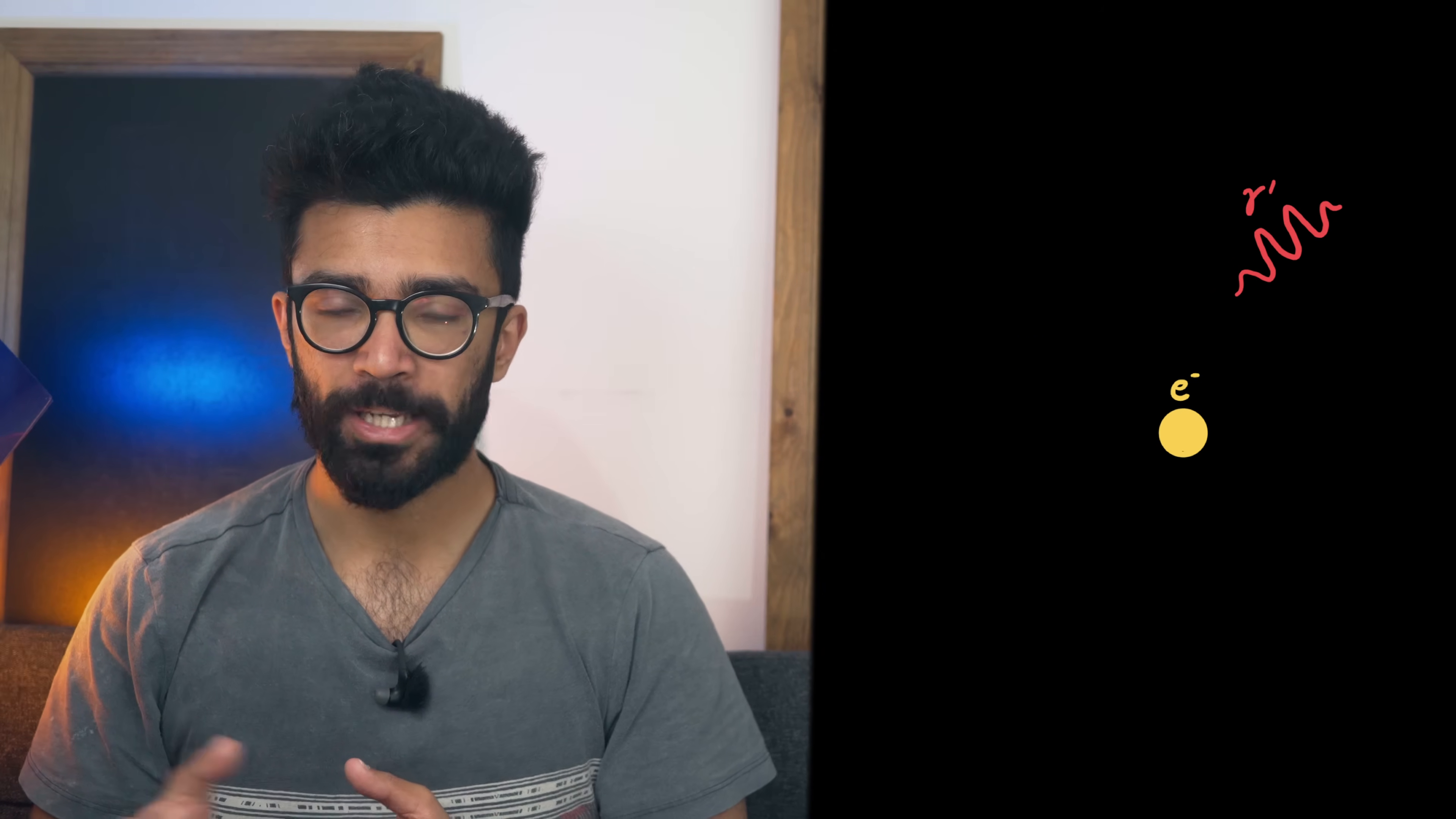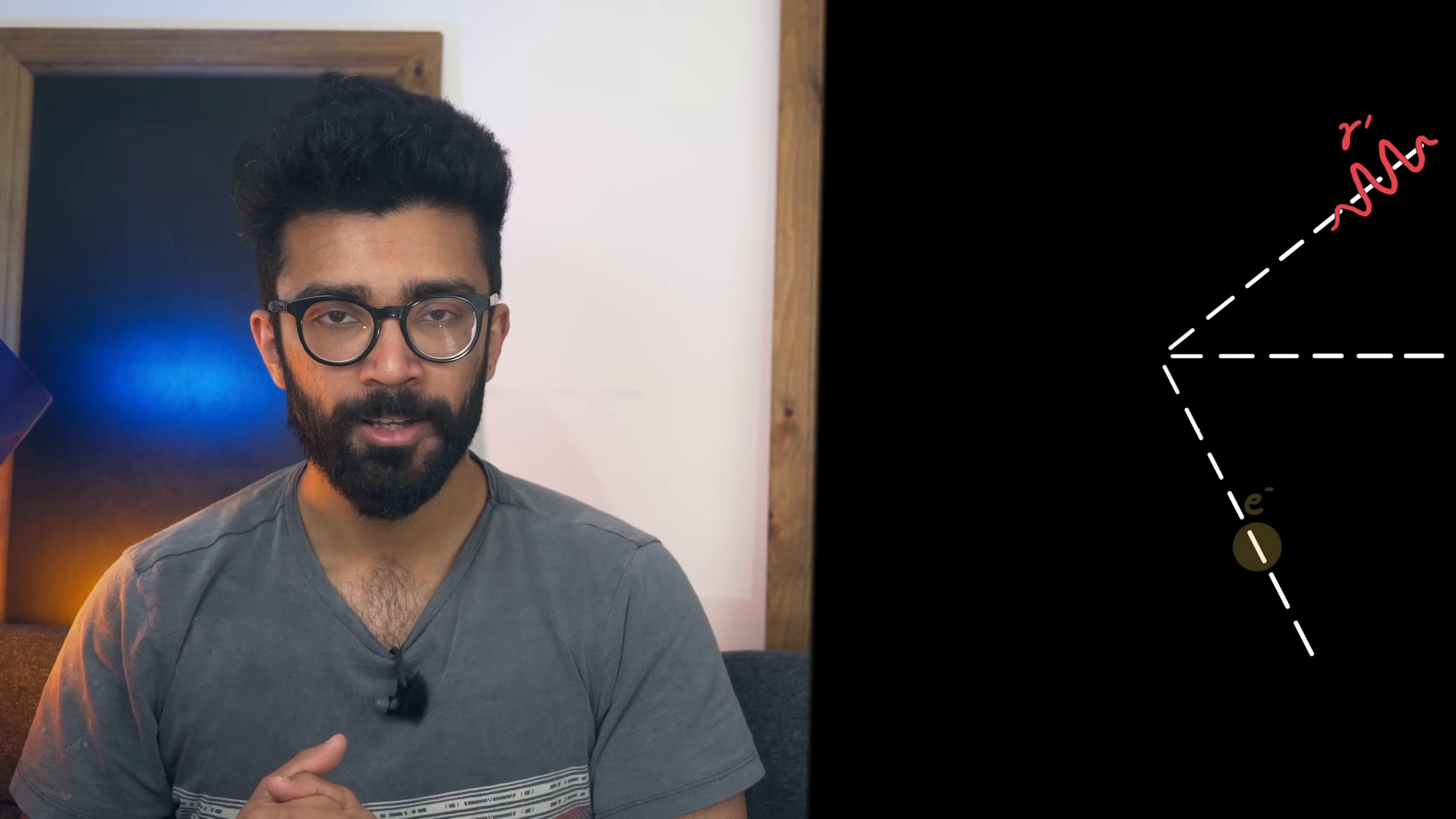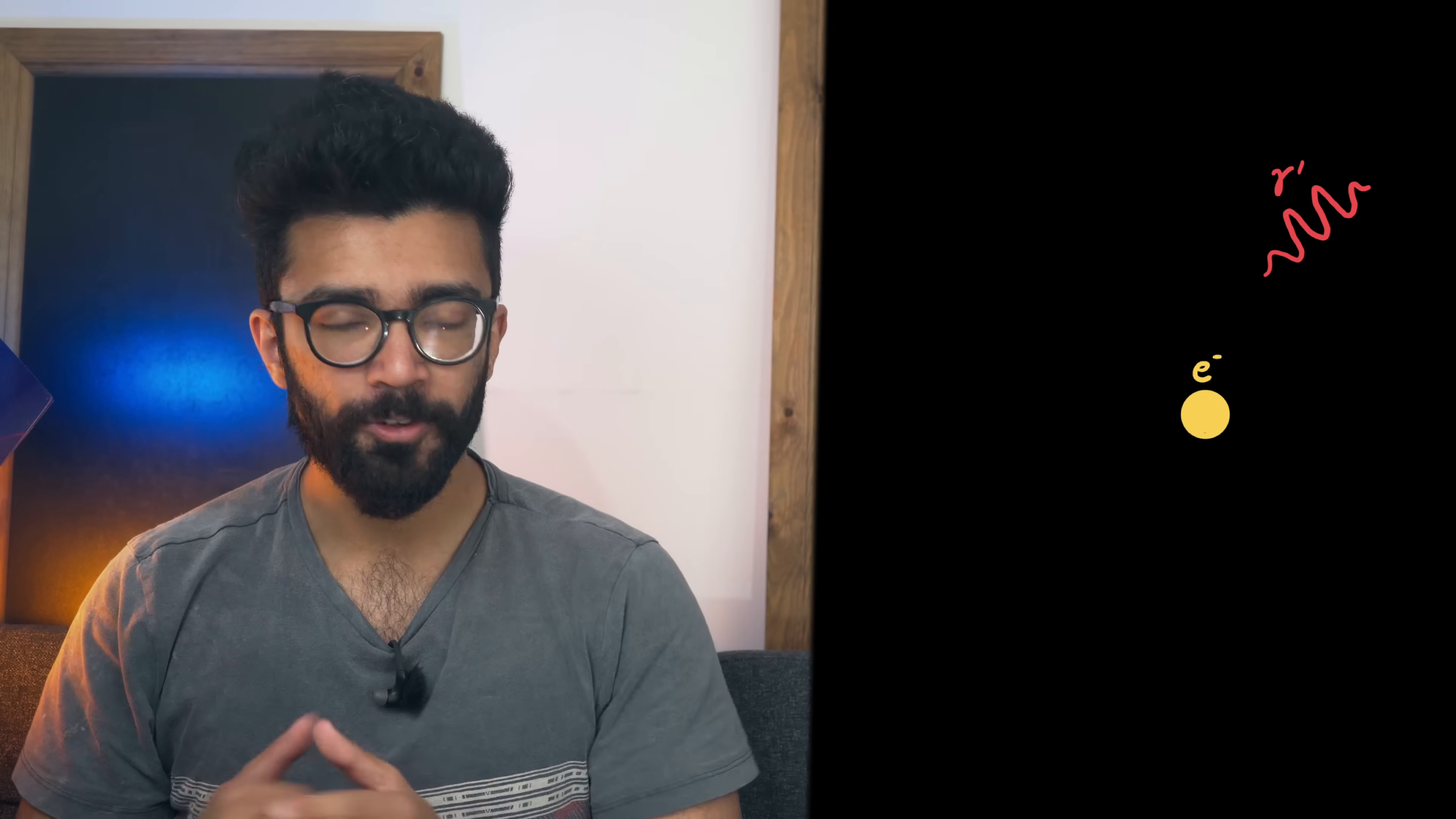And as a result we get the electron traveling in this direction and we get another photon let's say traveling in this direction with a longer wavelength than the first photon because this second photon has less energy than the first. This entire process the interaction between a photon and an electron followed by the outgoing electron and photon is known as Compton scattering.